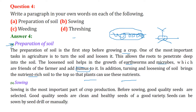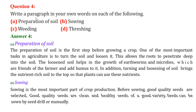Sowing is one of the most important parts of crop production. Before sowing, we need to select good quality seeds — clean, healthy seeds of a good variety. Sowing can be done using a seed drill or manually.